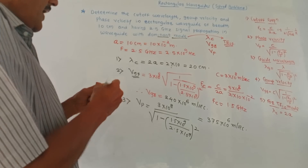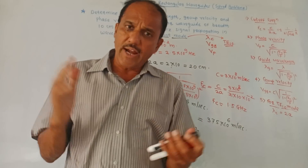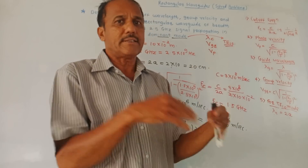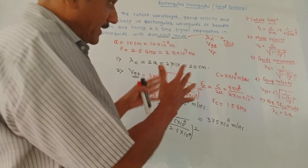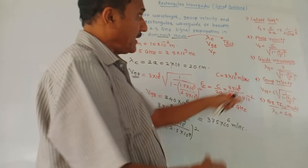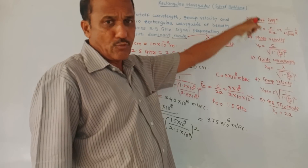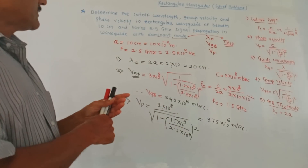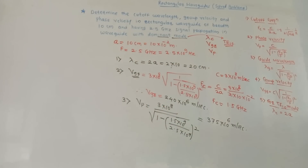As far as this rectangular waveguide and dominant mode — that is TE10 mode — are concerned, the numericals are pretty simple. You just have to memorize this list of formulas. Dear students, that's it for today's session. Thank you, thanks a lot for watching this video.